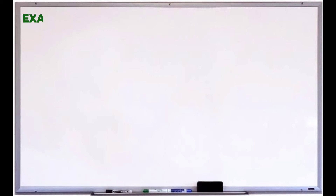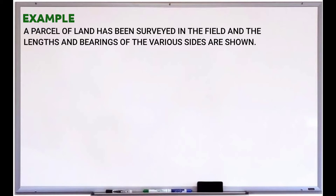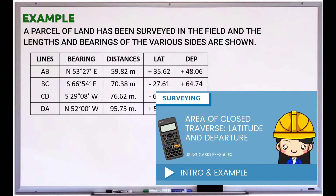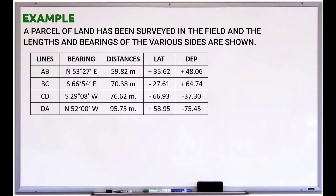The example I'm going to use is the same as the example from my last two previous videos, which is the area of closed traverse. A parcel of land has been surveyed in the field and the lengths and bearings of the various sides are shown. As you can see in the table, we already have the latitude and departure. For those who haven't watched my video on latitude and departure, you can check the link in the description below. In this example, when you solve the summation of latitude and departure, there is a small error. When you get an error, you have to balance the latitude and departure using the transit rule or compass rule. In this example, I'm going to use the transit rule.